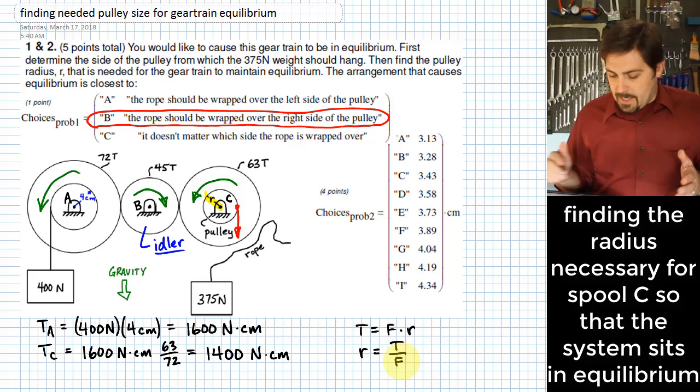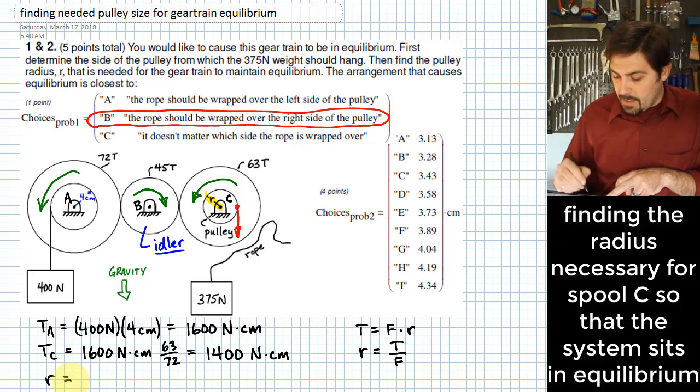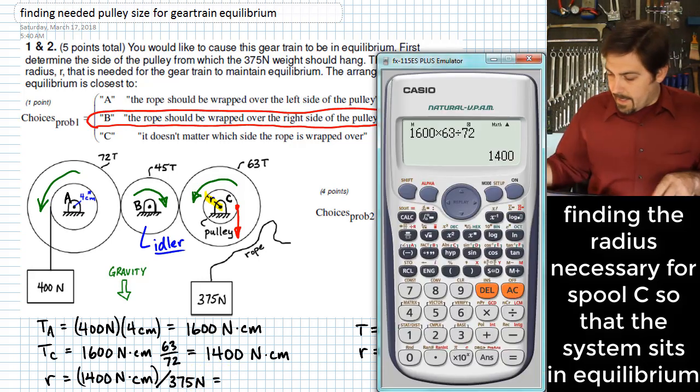What we're going to do now is take that equation and solve for radius. Radius is going to be equal to the torque we need over there, which is 1400, and we'll divide that by the force of 375 newtons. So once I do that, it ends up giving me a value of 3.73.